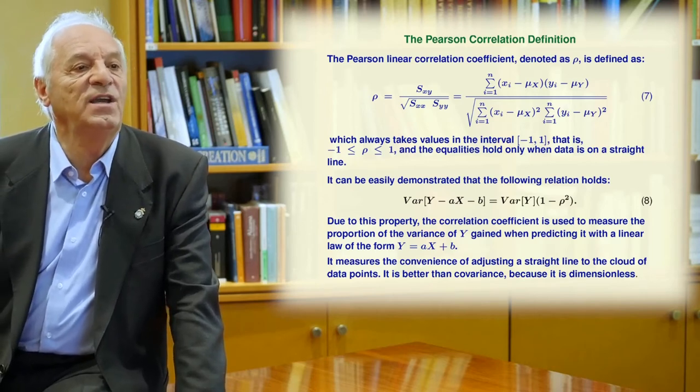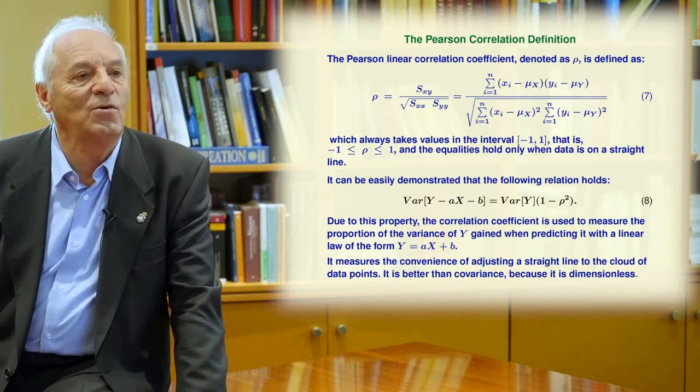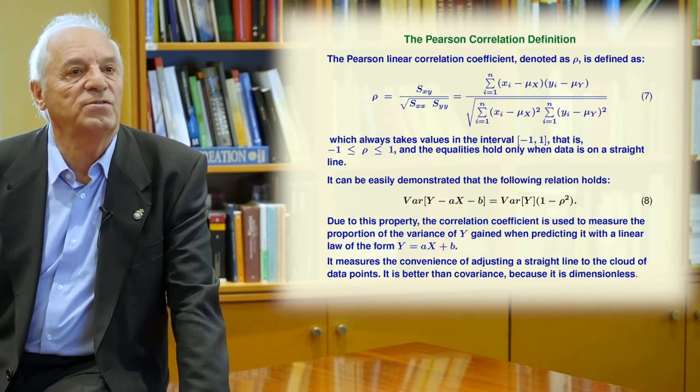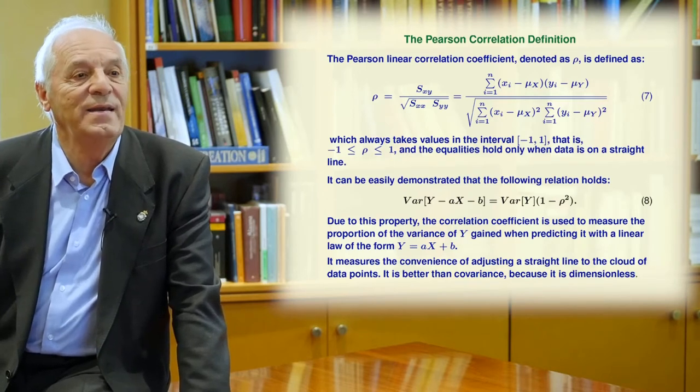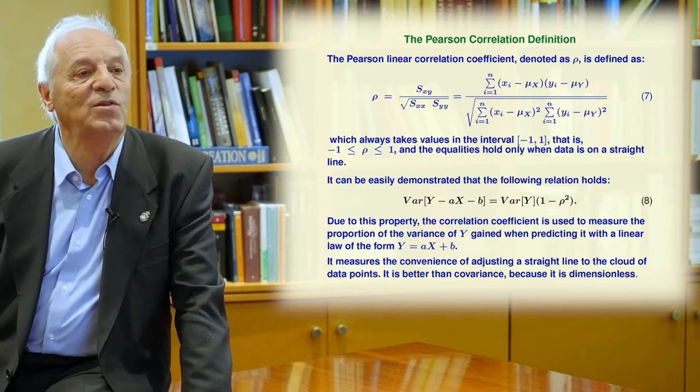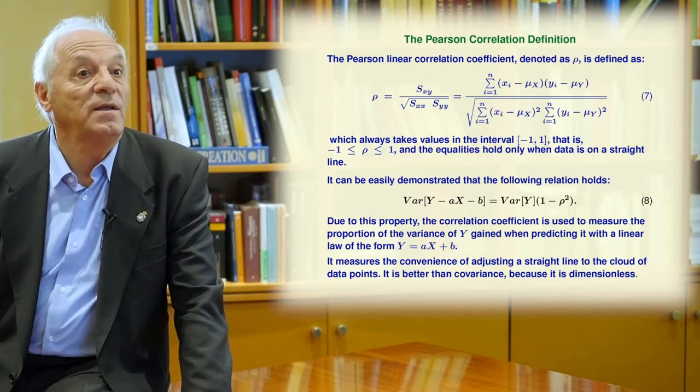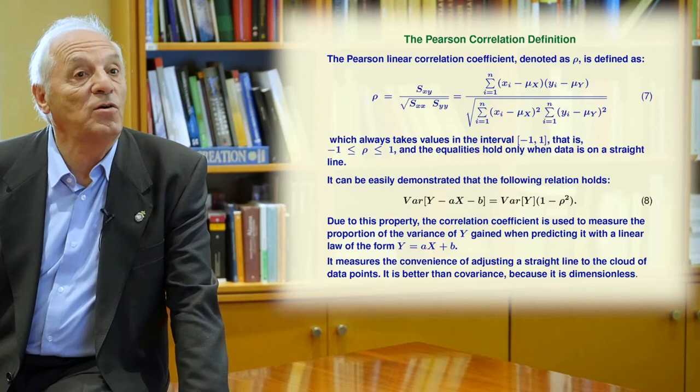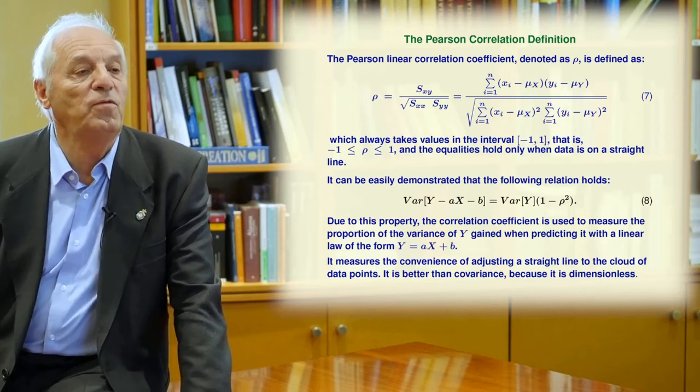And then look, if rho is zero, then the model doesn't contribute at all. The variance is the same as if you don't consider the regressor variable. However, if rho is one, what you get is one minus rho squared equals zero. So that means the prediction is perfect, and this is only when the model is a straight line. But if rho has an intermediate value, you improve the error.